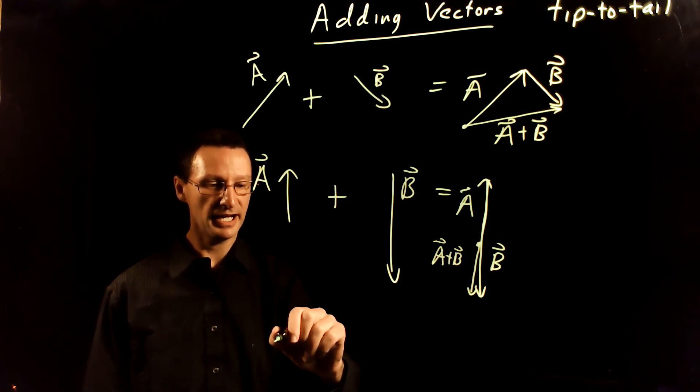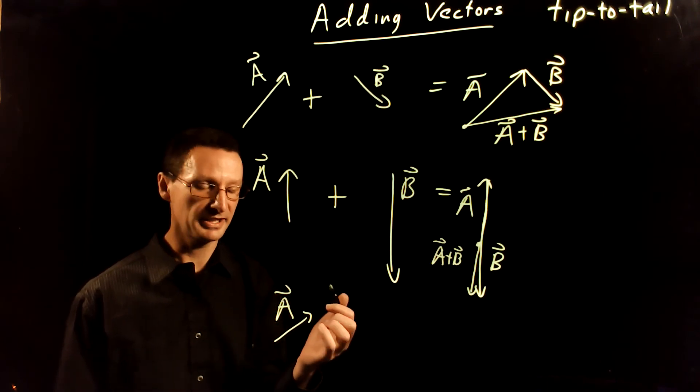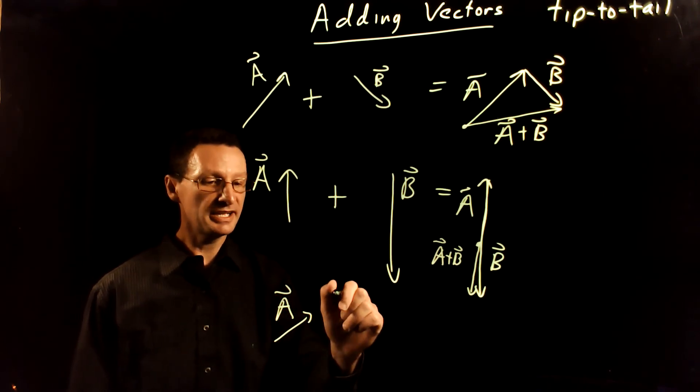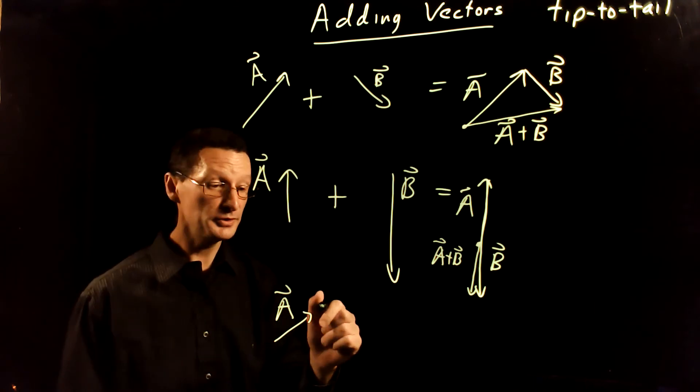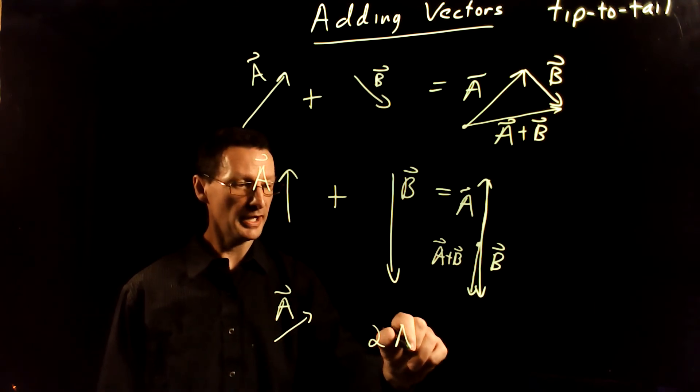So if you have a vector A, let's say it points in this direction like that, you can scale them. So you could think of 2A.